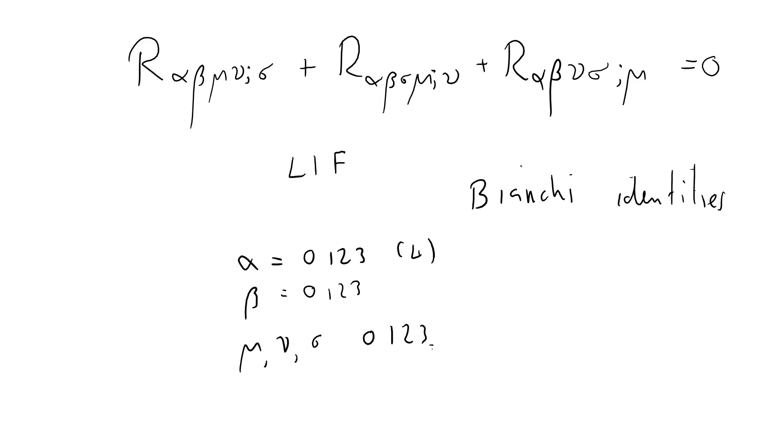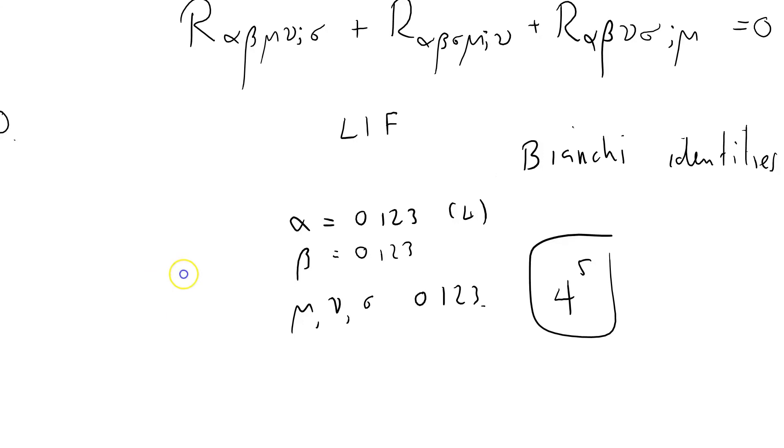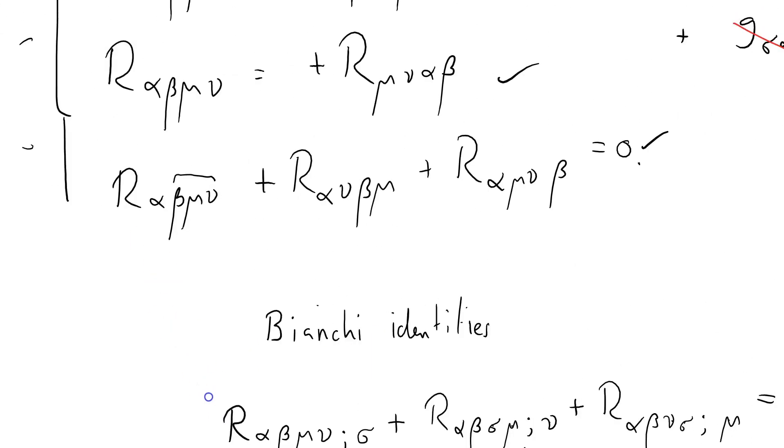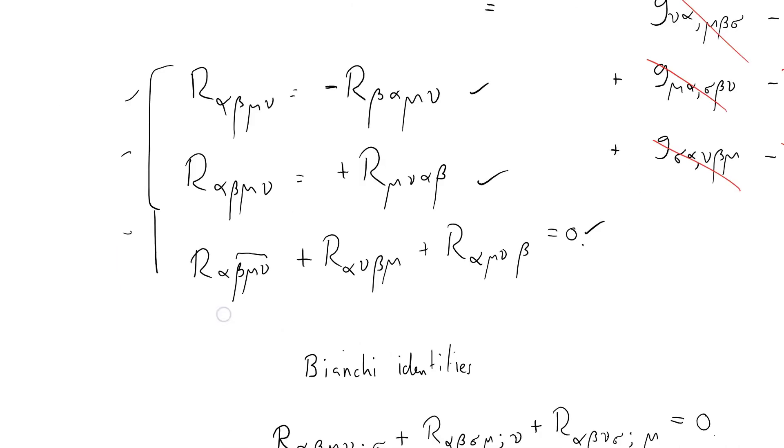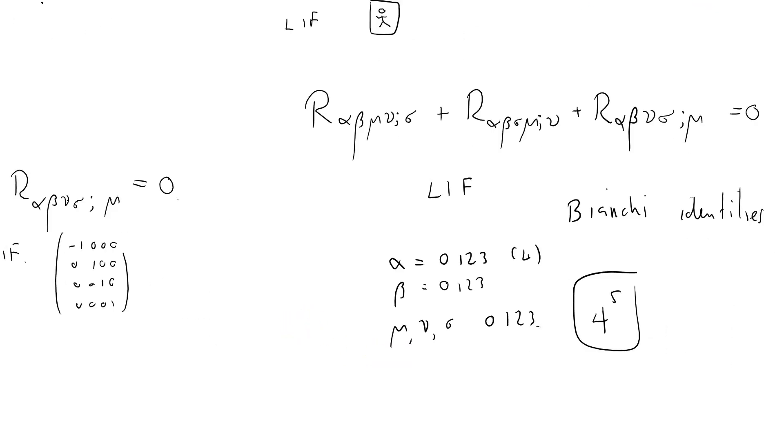So all together, we can plug different values into this, and we can get 4 to the power 5 distinct equations out of this system of identities. But because of the symmetries which we identified earlier, we don't really have that much information in terms of independent sets of equations.